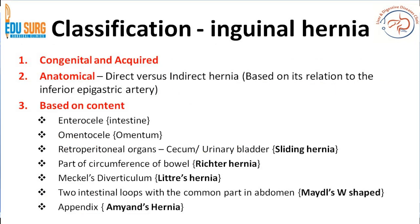Classification of inguinal hernia is a very commonly asked question and there are many ways to classify it. Anatomically — the most common classification — is direct versus indirect hernia, based on its relation to the inferior epigastric artery. The neck of an indirect hernia is lateral to the inferior epigastric artery, whereas the neck of a direct hernia is medial. When both direct and indirect are present in the same patient, it is known as a pantaloons hernia.